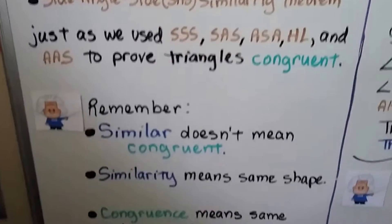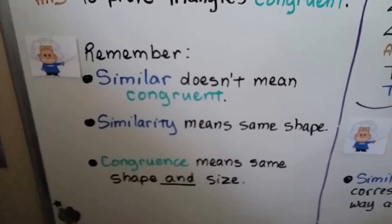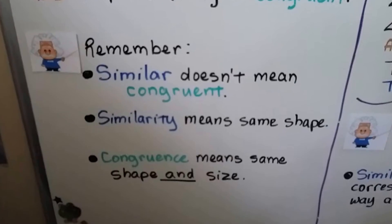Remember that similar doesn't mean congruent. Similarity means same shape, but congruence means same shape and size.